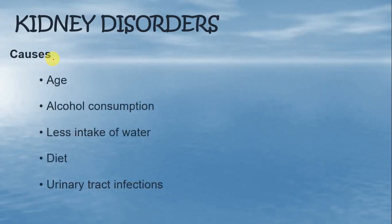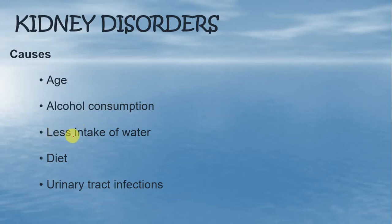What are the causes? यह stones क्यों बन जाते हैं? Number one is the age factor — age के बढ़ने के साथ kidney में stone बनने के chances ज्यादा होते हैं. Number two, alcohol consumption — बहुत ज्यादा alcoholic drinks का intake करने से भी kidney में stone बनने के chances बढ़ते हैं. Number three, less intake of water — पानी कम पीने से urine diluted बनने की बजाए concentrated बन जाता है, जिससे salts को urine के through remove करना मुश्किल होता है, और kidneys के अंदर उन salts की deposition ज्यादा होती है.